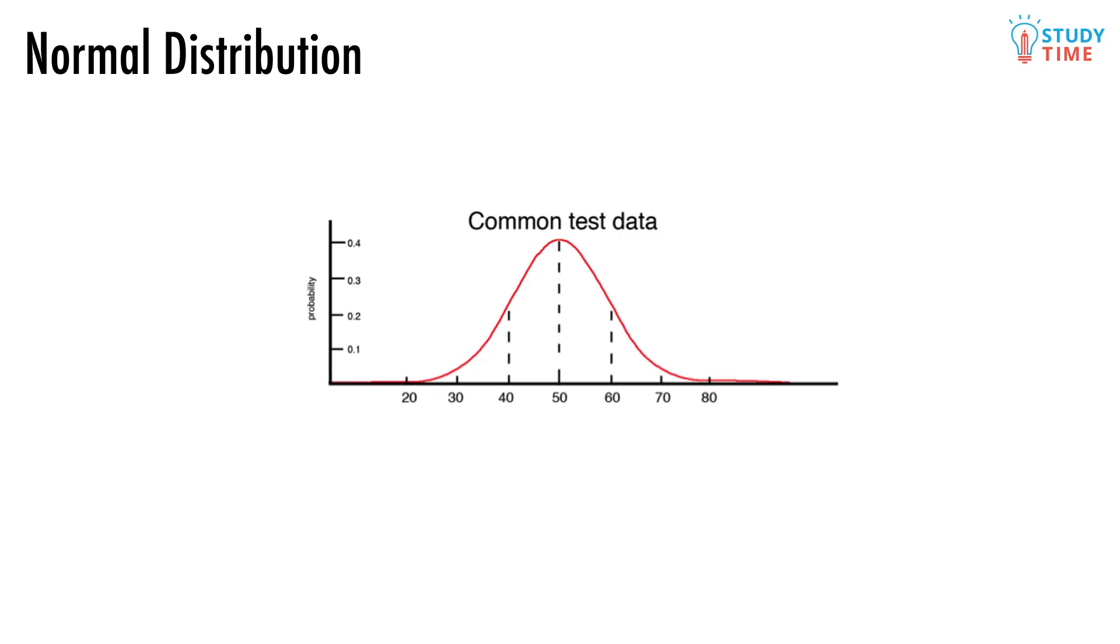We see the normal distribution all over nature, the weight of newborn children, say. Most newborn children would have around the same weight, and only a few would be very high or very low.